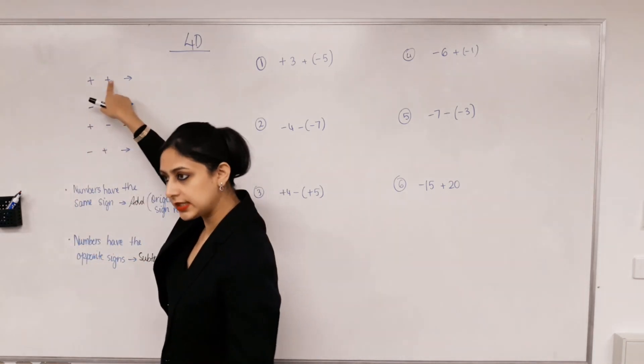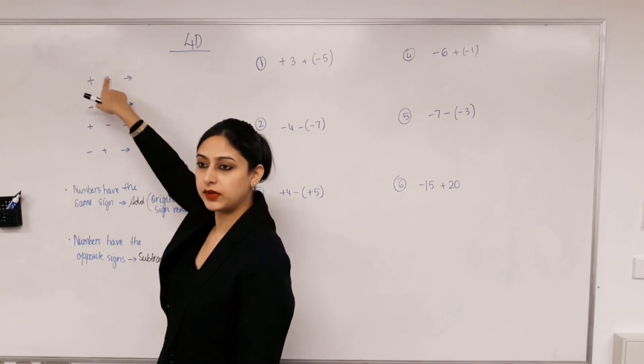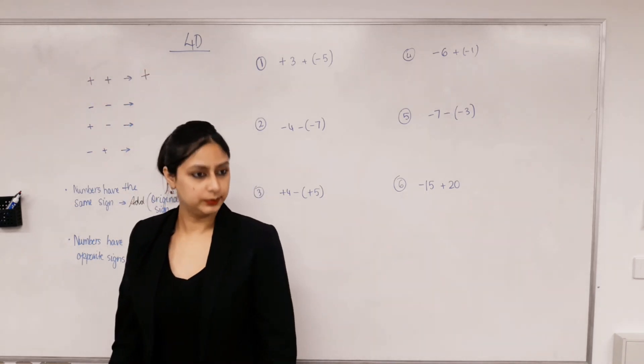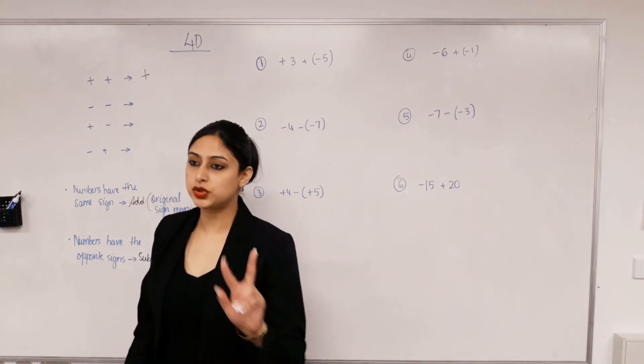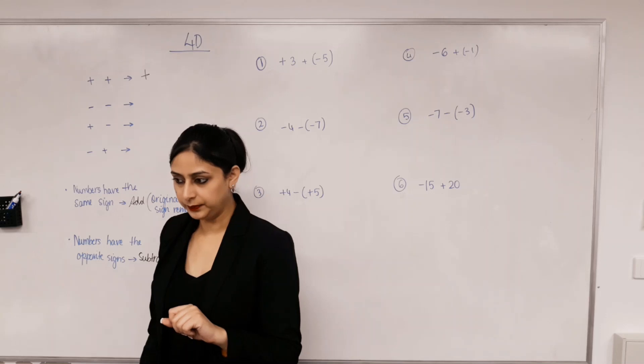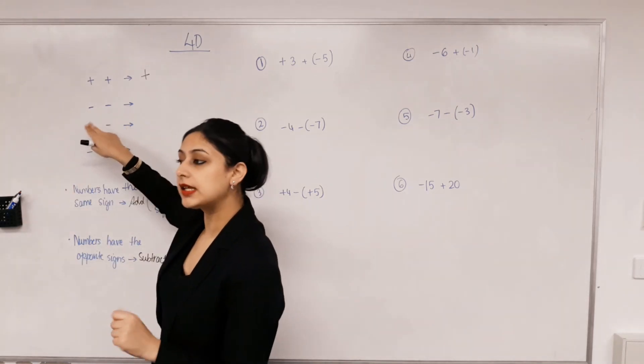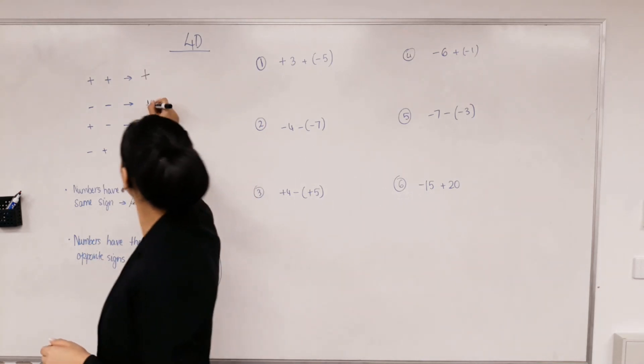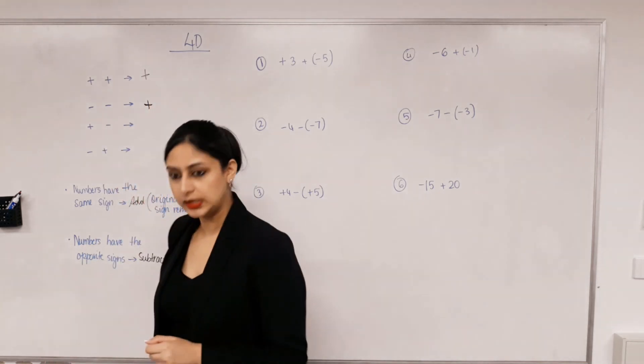So if the signs are the same, if it's a positive and a positive it becomes a positive. So you can replace two plus signs next to each other with a plus sign. Again if they're the same but they're negative they again become positive.